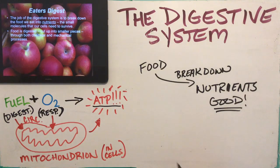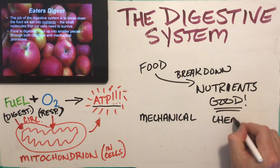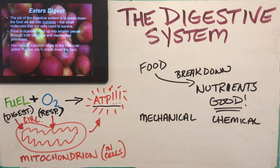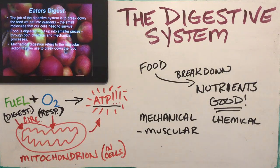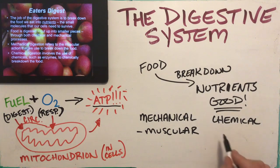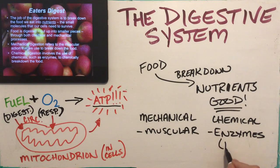Food is broken up into smaller pieces by two means: mechanical digestion and chemical digestion. Mechanical digestion uses muscular action to physically break down the food — an easy example is chewing, where your tongue and teeth physically mash the food into smaller pieces. Chemical digestion involves the use of chemicals like enzymes, which attach to food molecules and break them down further. Enzymes are a type of protein molecule.